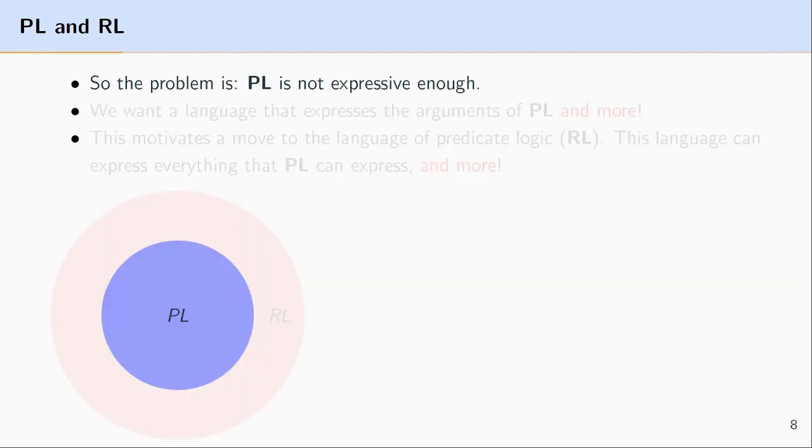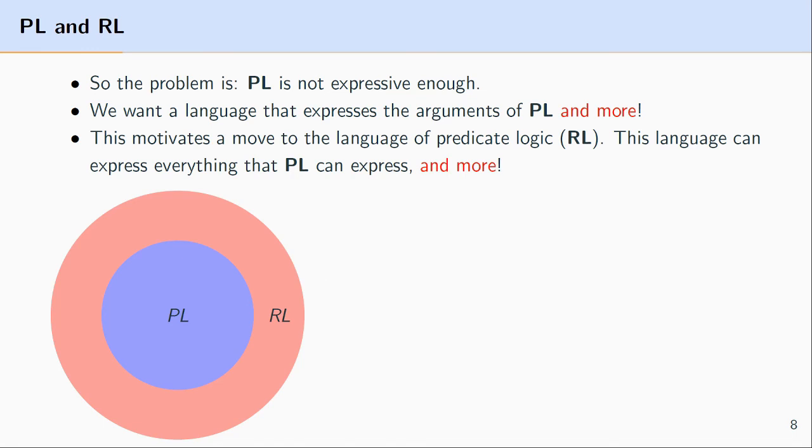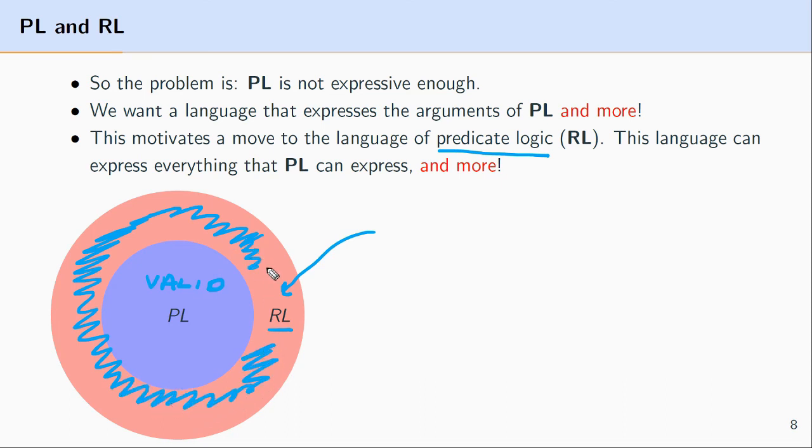To summarize, the language of propositional logic is not expressive enough. What we want is a language that's capable of expressing all of the arguments that propositional logic identifies as valid, but also a host of others that it doesn't capture as valid when those arguments are valid. So this motivates a move to a more expressive or more powerful logical language, and that's the language of predicate logic. This language captures all of the arguments that are valid in propositional logic, as well as a host of other ones, including that Socrates is mortal example. It will take that argument, translate it into the formal language, and when we run a particular test on it, it'll come out as valid, which is the result that we would like.